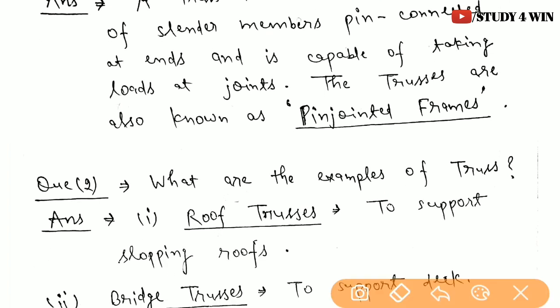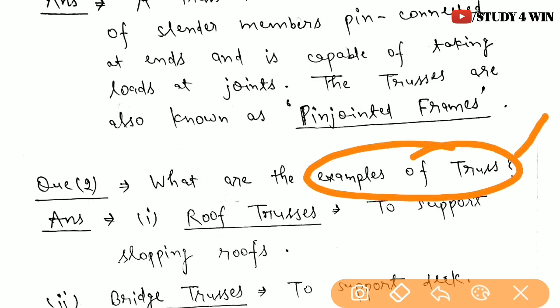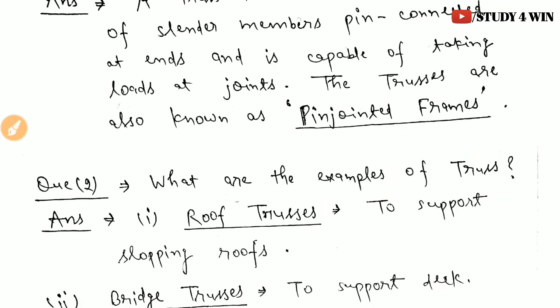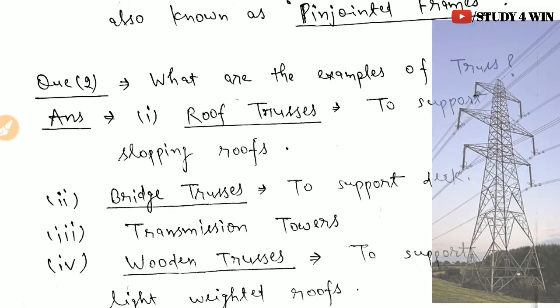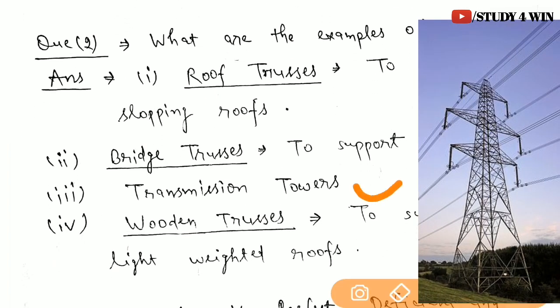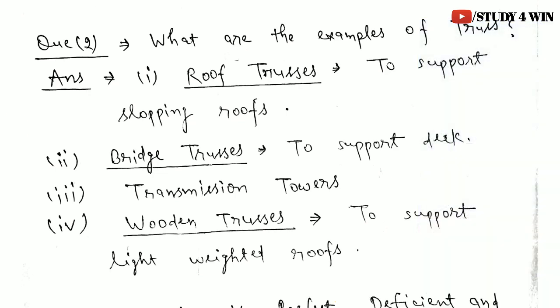The next question is: what are the examples of a truss? The first one is a roof truss, which is used to support sloping roofs. Next is bridge trusses, which are used to support the deck. Next is transmission towers — a very common example of a truss that all of you see in daily life. The next one is wooden trusses, which are used to support light-weight roofs or light-weight structures.